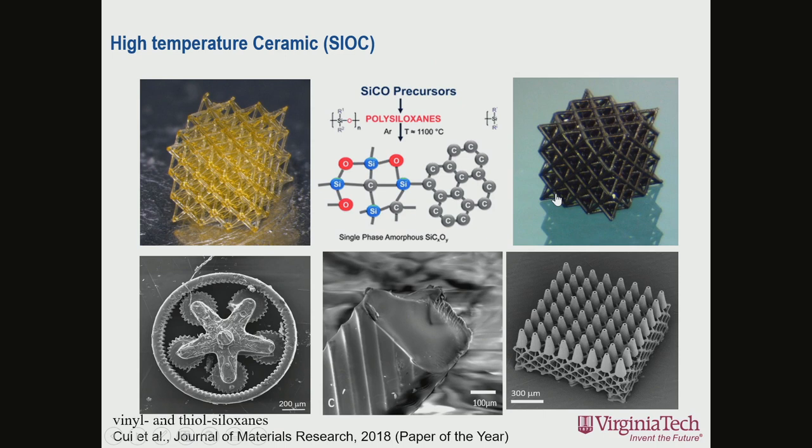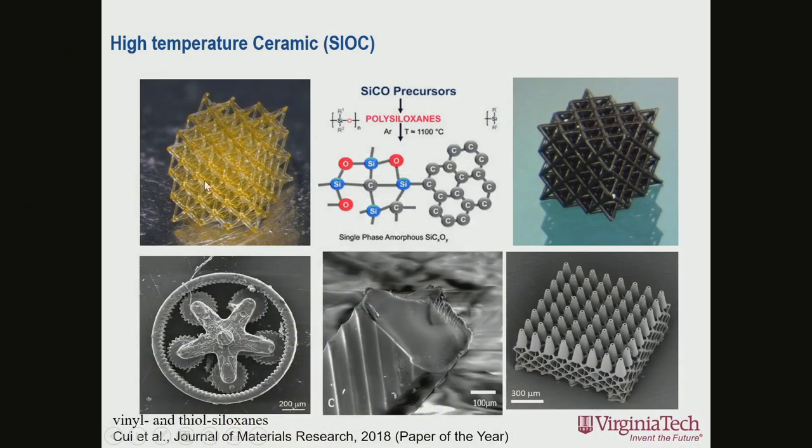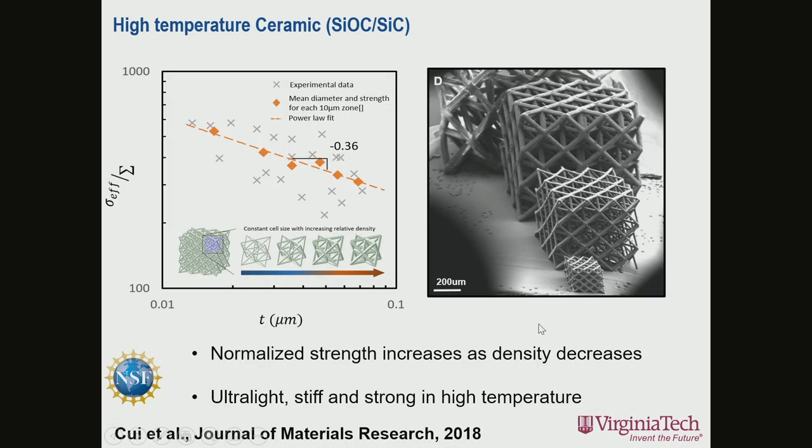We are really focusing on a few different types of high-temperature materials, including high-temperature ceramics, silicon-oxy carbide, and silicon carbide. We synthesize pre-ceramic monomers, fabricate the green body, and convert it using pyrolysis into pure silicon-oxy carbide. In this process, there are no particles and no sintering involved, so what you end up with is highly dense, high-temperature ceramic arrays with virtually no porosity.